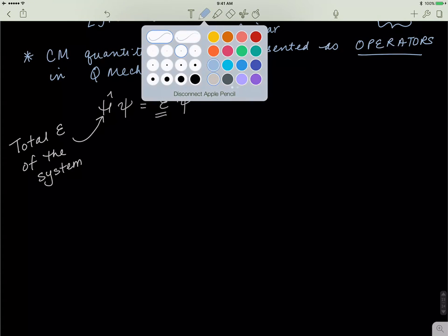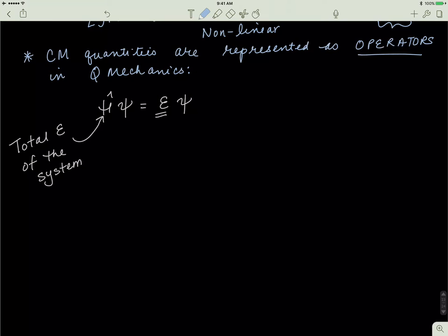So what form does the Hamiltonian operator take? The Hamiltonian operator is the kinetic energy plus the potential energy. The potential energy is simply V as a function of x — that's the classical analog. In classical mechanics the potential energy is V(x), and in quantum mechanics it is also V(x). The only thing that changes is the representation of kinetic energy.